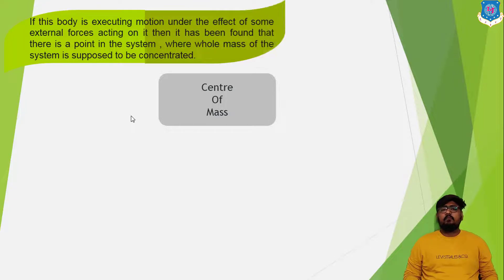There are basically two methods or two definitions to describe center of mass. The first one is if the body is executing motion under the effect of some external force acting on it, then it has been found that there is a point in the system where the whole mass of the system is supposed to be concentrated at one point. So that point is known as center of mass.